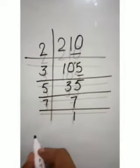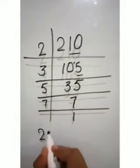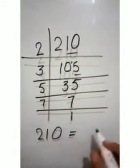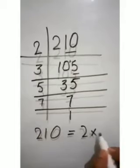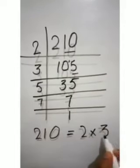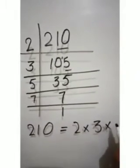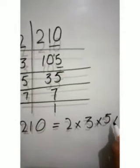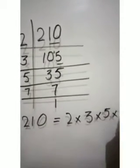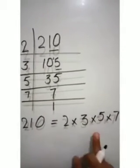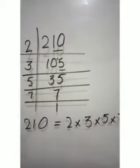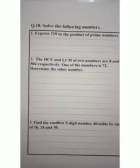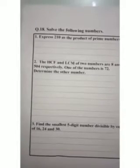Now we have to write 210 as a product: 210 = 2 × 3 × 5 × 7. So 210 is written as the product of its prime factors. Now, students, let us move on to the second part of question number 18.